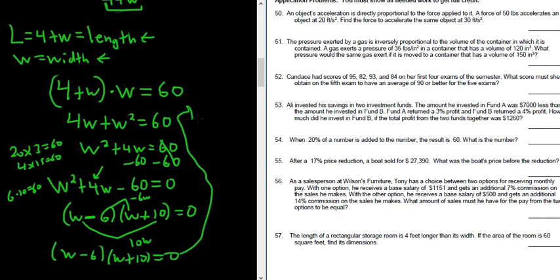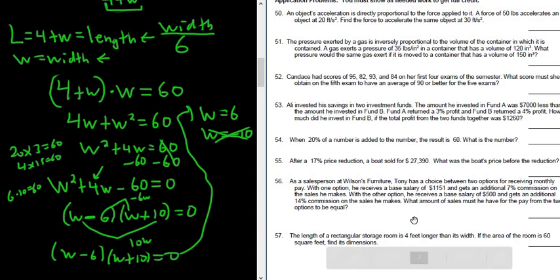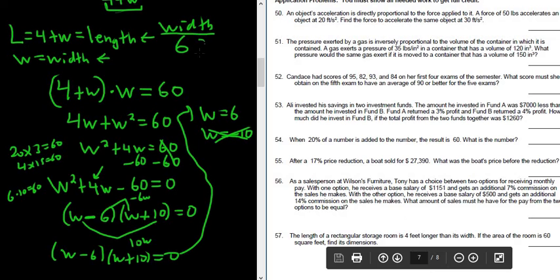This gives us two possible answers. W equals six and W equals negative 10, right? Pretty easy to see. Those are the choices. And it can't be negative 10, right? Because you can't have a negative width, okay? So one of the answers, so the width, is going to be six. And what are the units? Feet. I'll spell it. So feet.